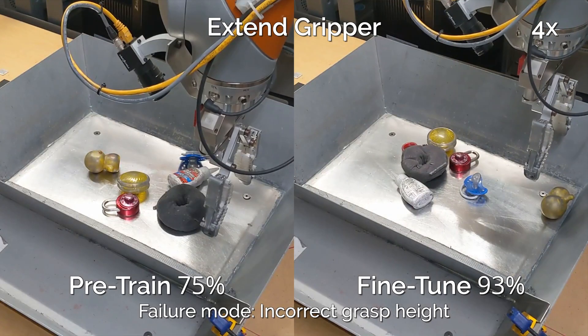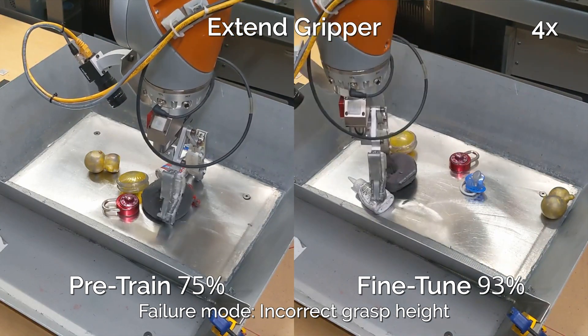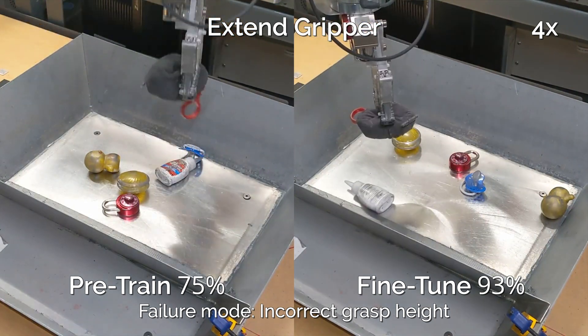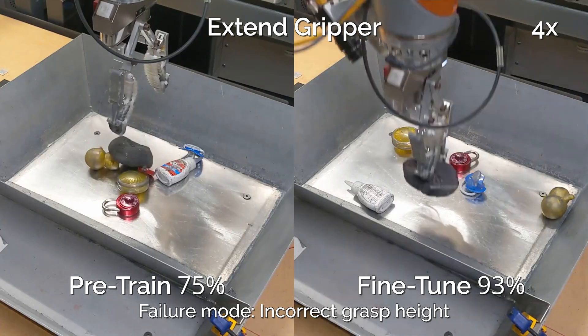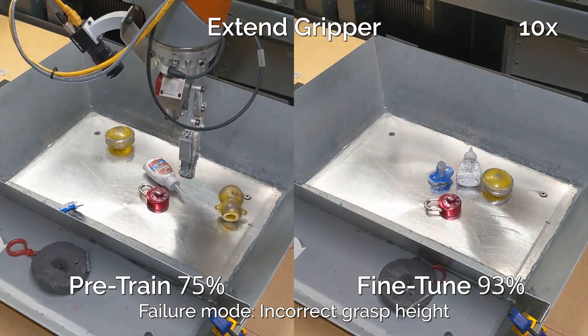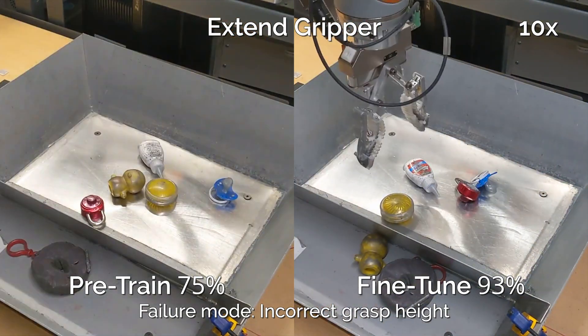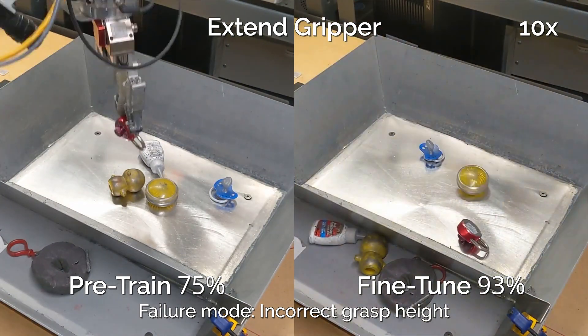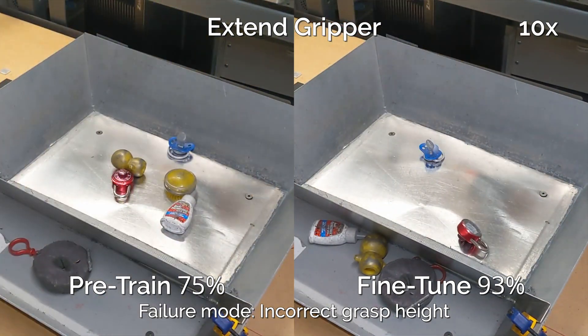Next, we modify the robot's gripper. If you look closely, you'll see we've added an extra layer of grip material, making the gripper both narrower and one centimeter longer than the original. This causes the untuned policy on the left to sometimes grasp too high and miss, unlike the fine-tuned policy on the right.